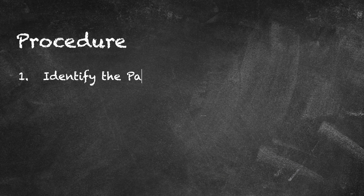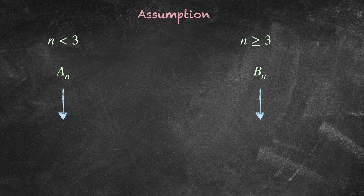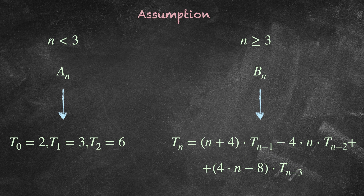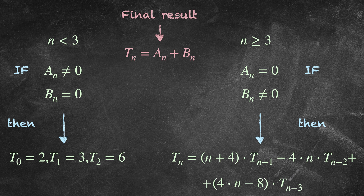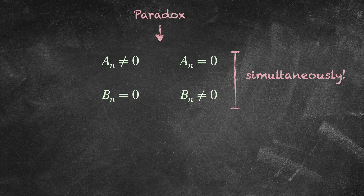Step number one: identify the paradox. We base our line of reasoning upon the following assumption: the well-known sequences aₙ and bₙ are the sequence that produces the first three terms t₀, t₁ and t₂, and the sequence producing tₙ for n ≥ 3. How might these two sequences coexist? This is possible if for n < 3, aₙ is different from 0 and bₙ equals 0, and if for n ≥ 3, aₙ equals 0 and bₙ is different from 0. Therefore we found the paradox: both sequences aₙ and bₙ must be 0 and different from 0 simultaneously — state one must hold for n < 3, and state two must hold for the other requirement. How do we disentangle this paradox? We use the fractionation technique.